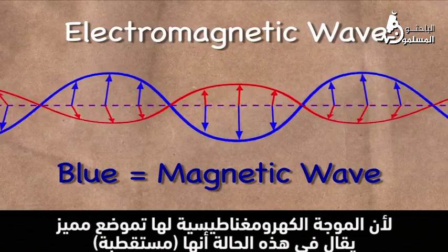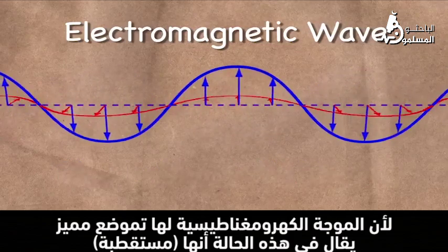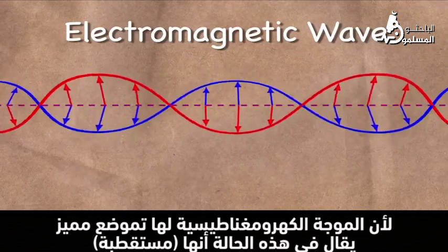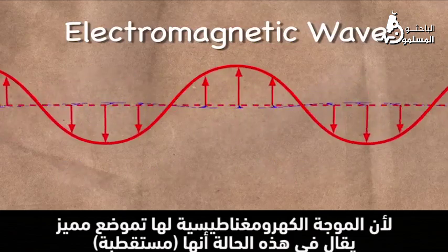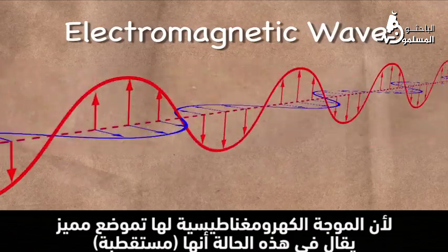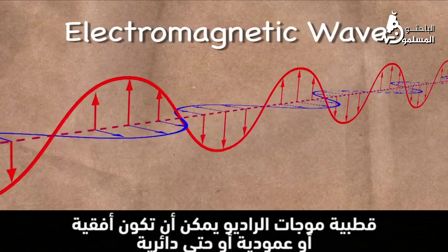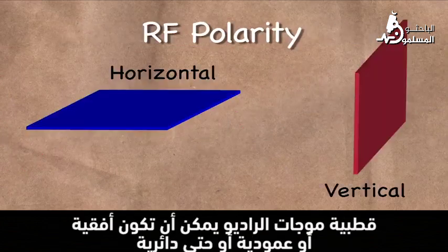Because the electromagnetic waves have a distinct orientation, they are said to be polarized. The polarity of an RF signal can be horizontal, vertical, or even circular.